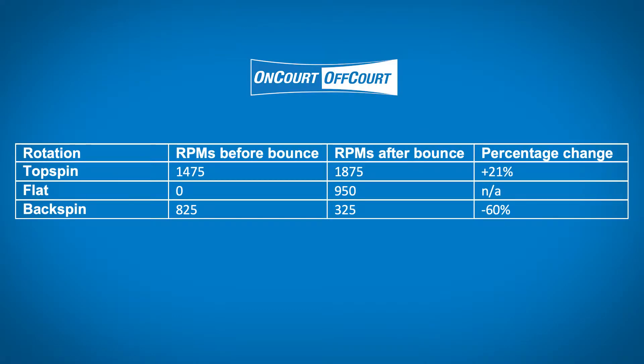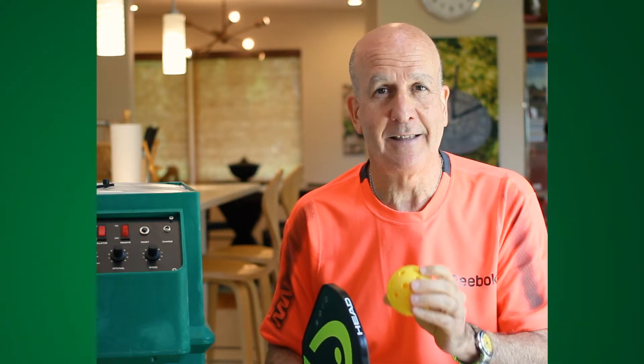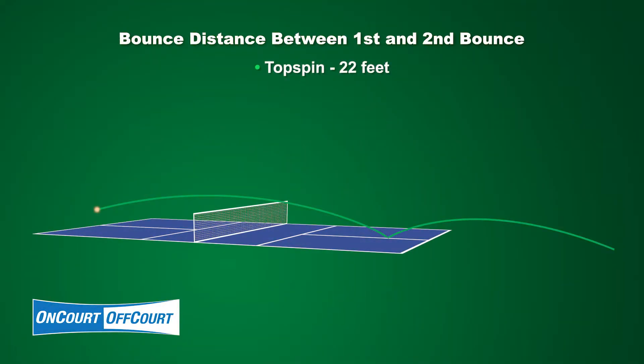Hi there. In this tip we're going to talk about the effect of spin on the flight of the ball after the bounce. We've got graphics on screen that'll help you visualize it. In tennis it's very dramatic because there are more revolutions per minute — the ball grabs the court much more than a pickleball can. The ball in pickleball doesn't compress like a tennis ball so it rebounds, but in pickleball there is some difference and you're going to see this on screen with our graphic.